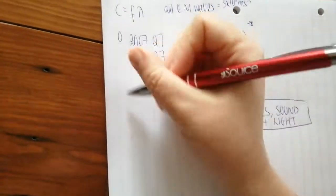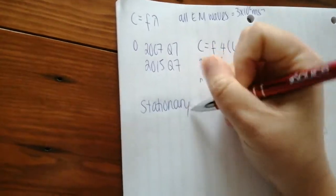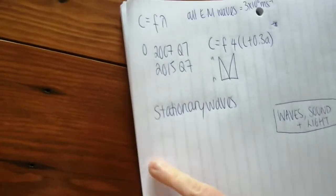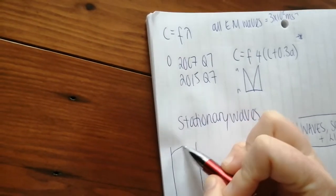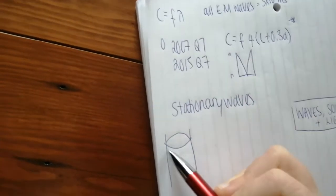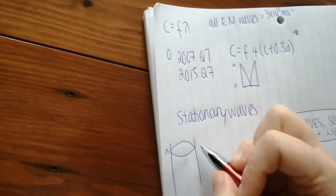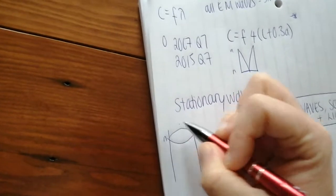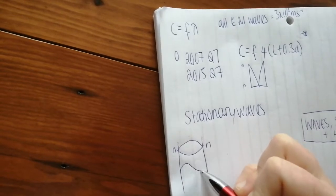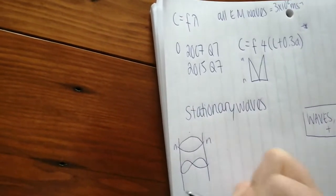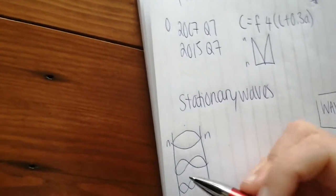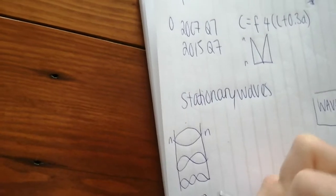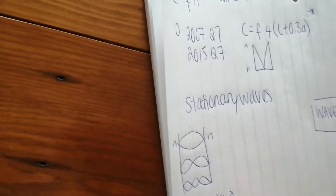Okay, so moving on to talk about stationary waves. So if I have a string, which is a stationary wave at its fundamental frequency, what you'll find is it looks like this. You have a node, a node and an anti-node here. If it's at its second harmonic or first overtone, it looks like this. If it's at its third harmonic, it looks like that.